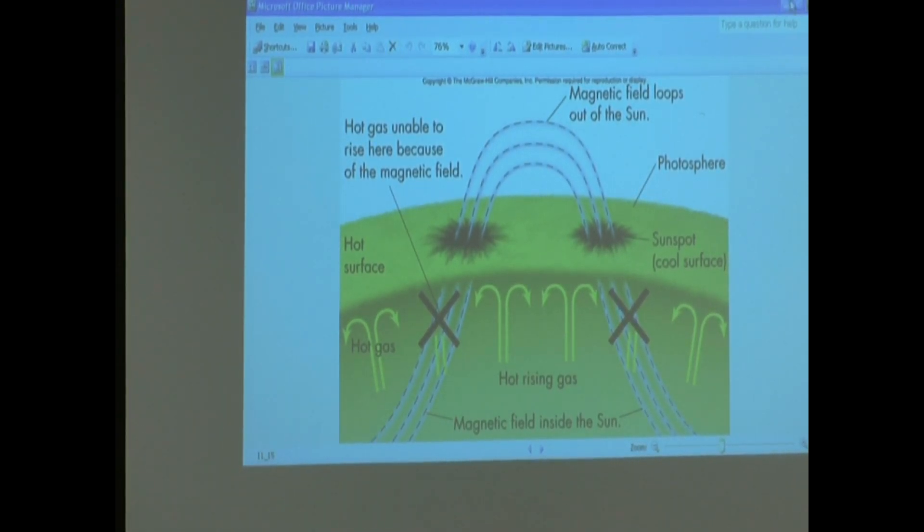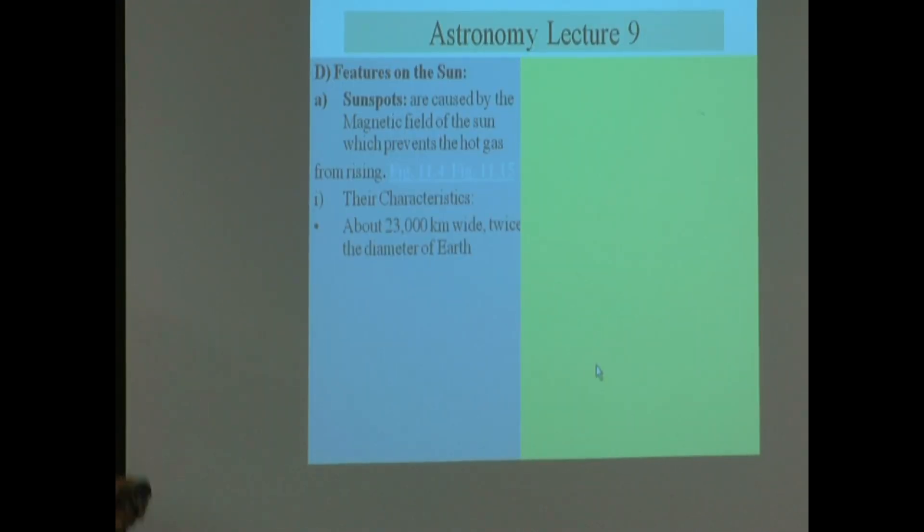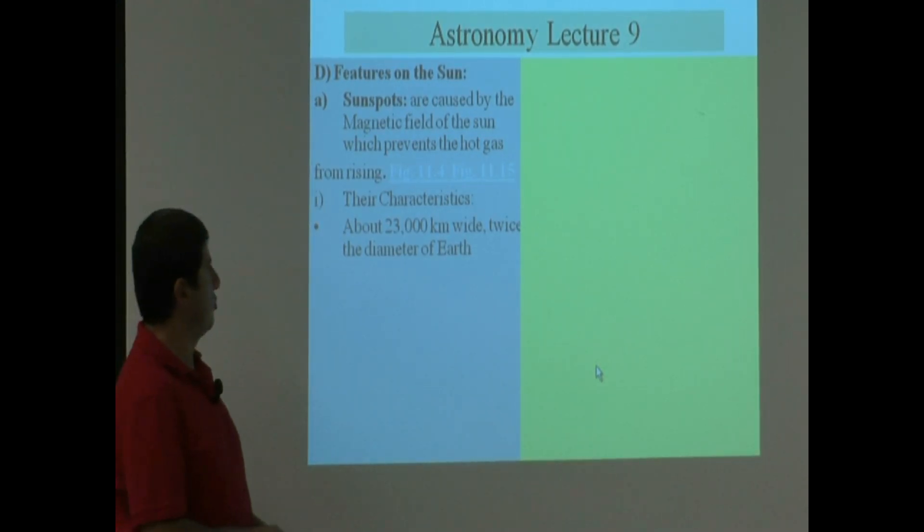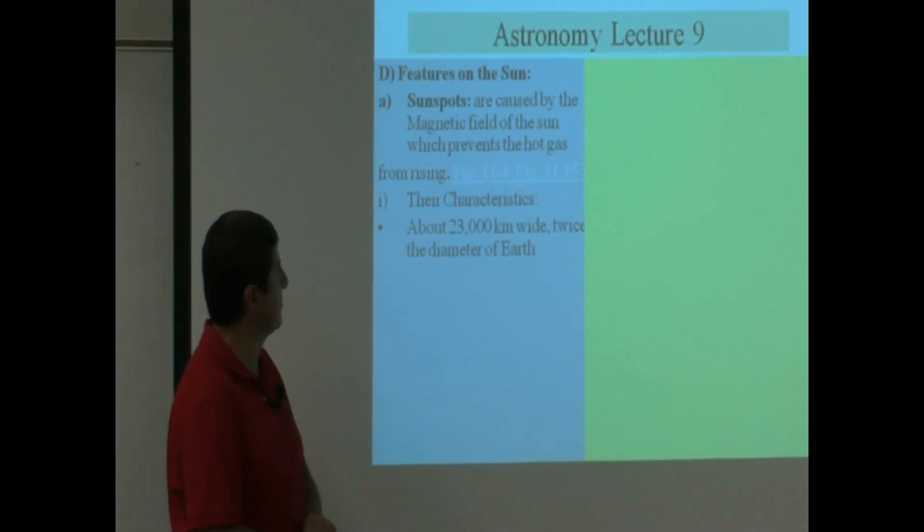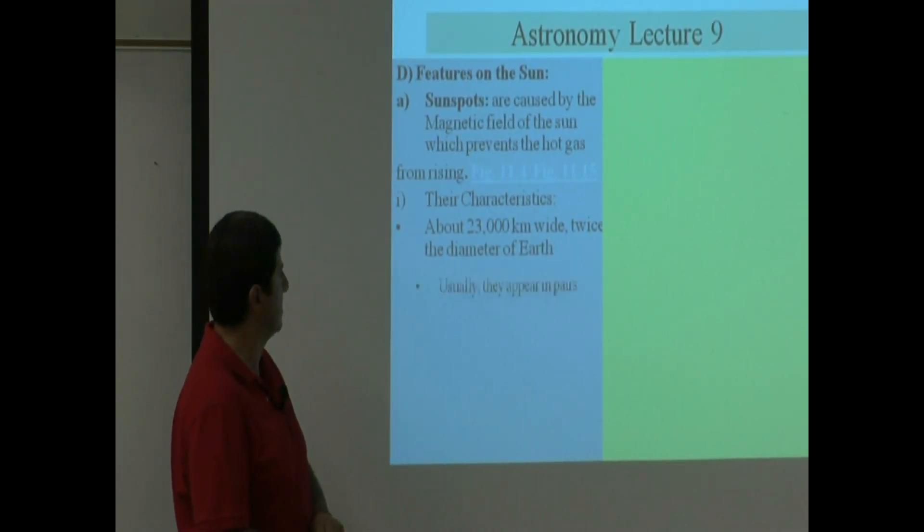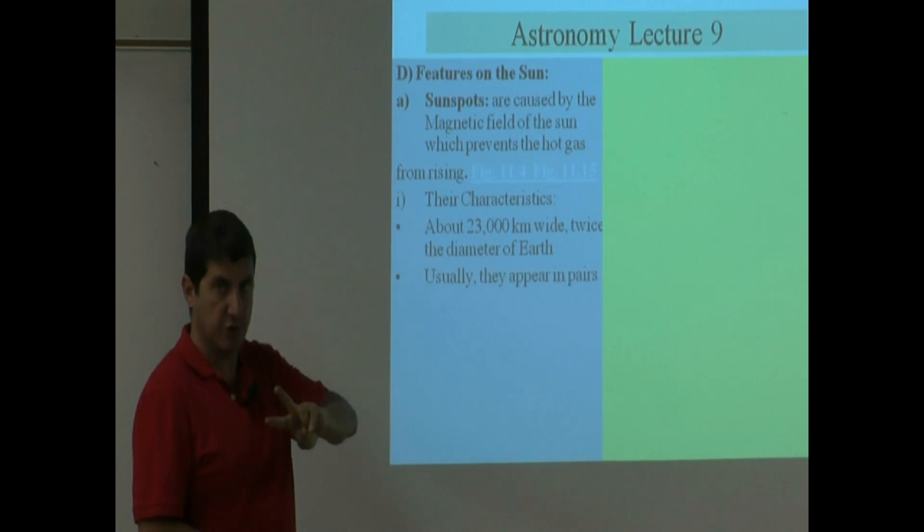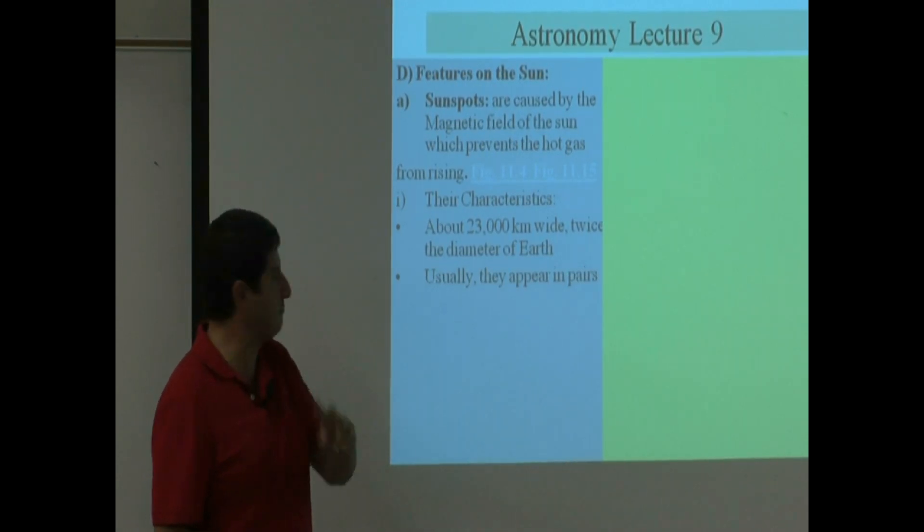And they should all come in pairs. So if this theory is correct, all of those things should hold. And it ends up that they are. All those things hold true. About 23,000 kilometers wide, twice the diameter of Earth, that's the typical size. Usually they appear in pairs. So it does end up that they appear in pairs.